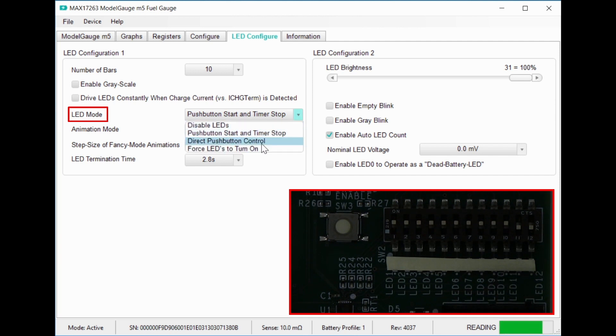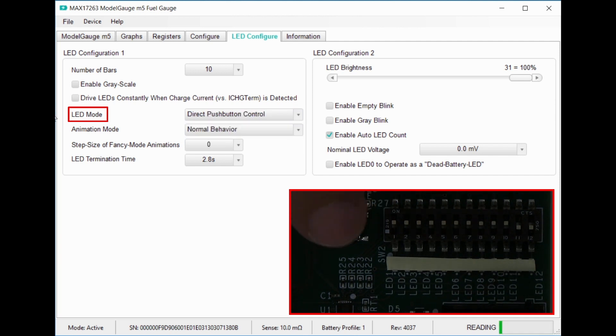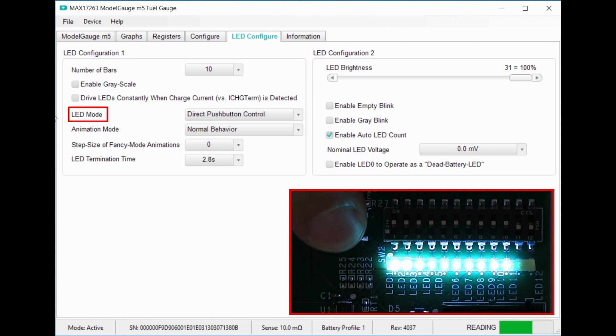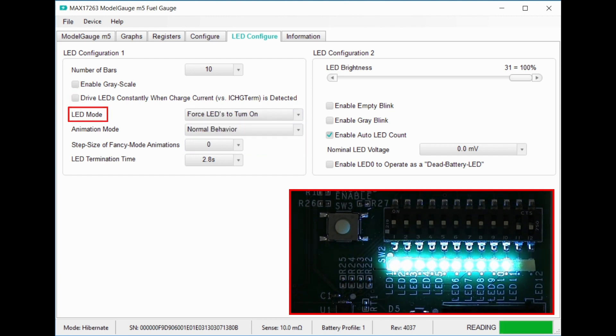I can also set direct push button control, which will keep the LEDs on when I hold the button down. In both of these states, you can use the check box here to keep the LEDs on when the battery is charging. For now, I'm going to force the LEDs on so I can demonstrate some more features.